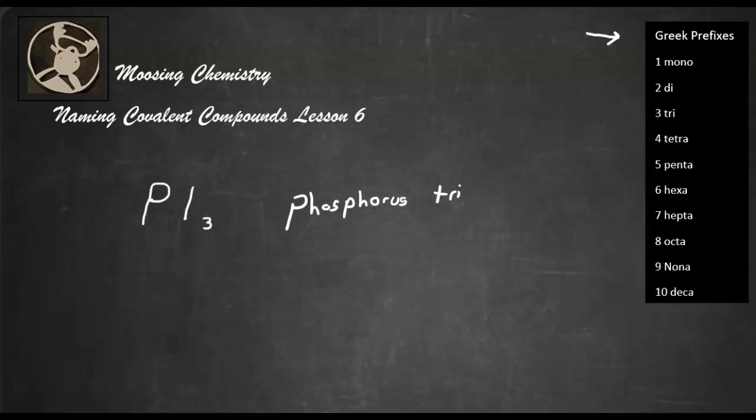Tri-iodide. All right, so you can put double I's together here. All right. Hey, why didn't you put mono here? Why don't we put mono there? Because we never use mono in the first name. Do not use mono in the first name.